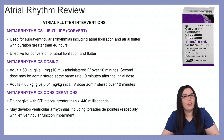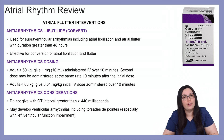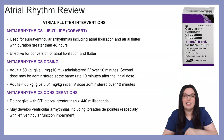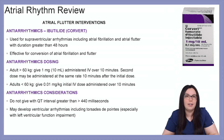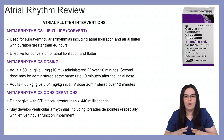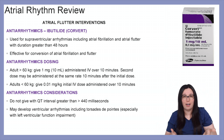Ibutilide, also known as Corvert, is another antiarrhythmic used for supraventricular arrhythmias including atrial fibrillation and atrial flutter with durations greater than 48 hours, and is effective for conversion of both rhythms. For adults greater than 60 kilograms, give 1 milligram (approximately 10 mL) administered over 10 minutes; a second dose may be given at the same rate 10 minutes after the initial dose. For adults less than 60 kilograms, give 0.01 milligrams per kilogram IV over 10 minutes. Do not give if the QT interval is greater than 440 milliseconds, and monitor for ventricular arrhythmias including torsades de pointes, especially if left ventricular function impairment is present.